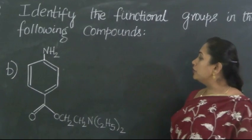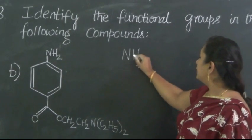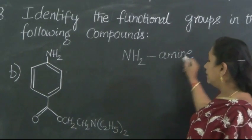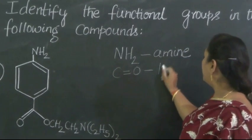Now which are all the functional groups we need to account: NH2 is there, NH2 is amine, then CO is there.